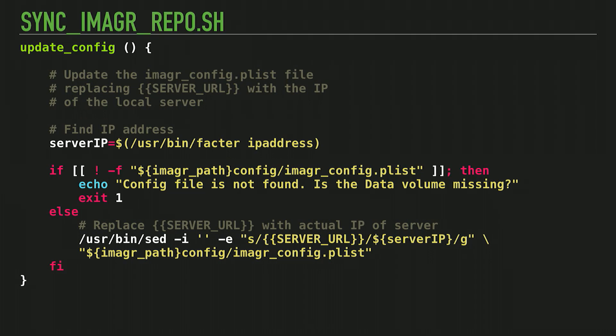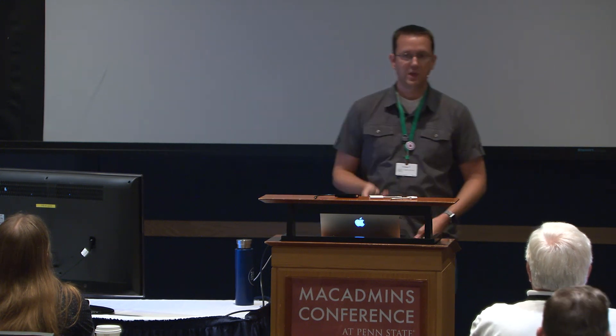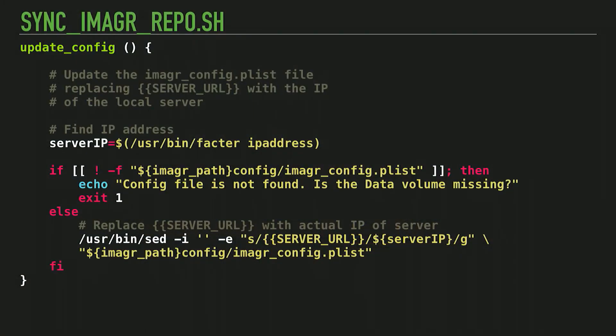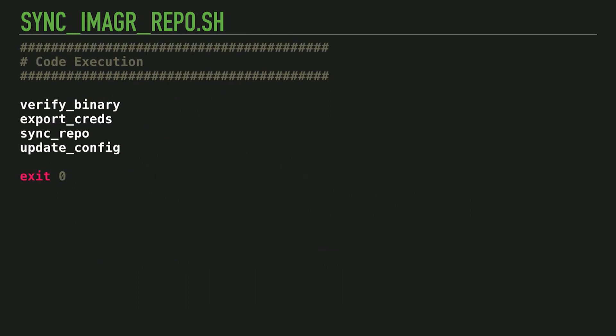Lastly, I need to update the configuration plist for Imager. Remember that server_URL placeholder I showed earlier? Here's why: none of our stores have the same IP address for their servers — they're all on different subnets. What we do is use an open-source product called Facter, which can collect information about your computer. We grab the IP address of the server during this run, and then we replace every instance of the server_URL placeholder with the actual IP address of the server, so it's up to date every single time. No matter what changes from day to day, the configuration plist will always reflect the current IP address. Also helpful if you don't have static IP addresses — which you should, since it's a server.